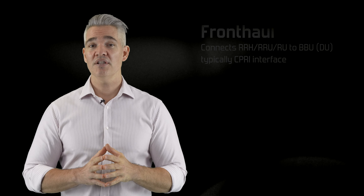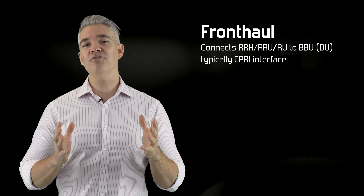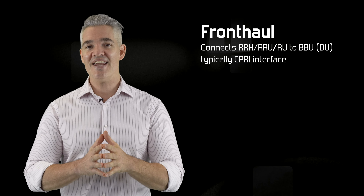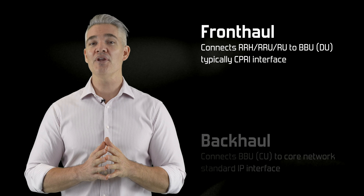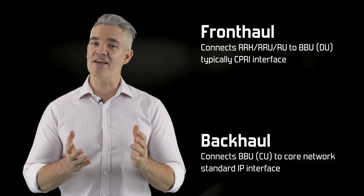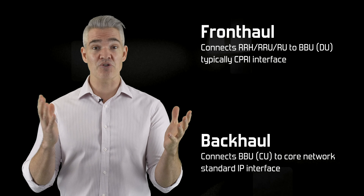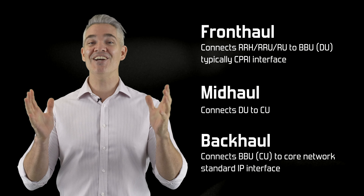The network that connects the radio resource heads to the BBU is called fronthaul, and to date uses a relatively standard interface based on CPRI. The network that connects the BBU to the core network is called backhaul, and it's typically over a standard IP interface. And the network in between the distributed and the centralized units? You guessed it — midhaul.